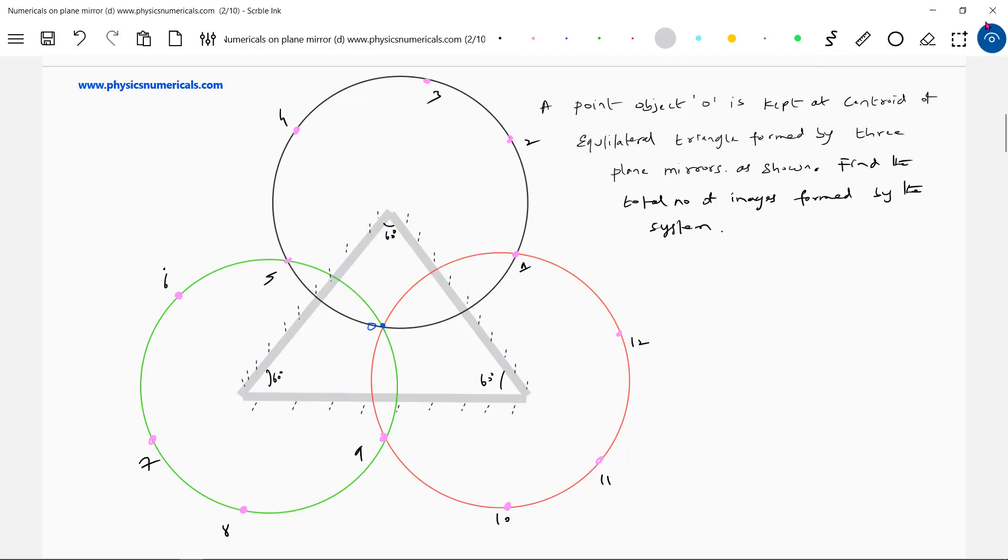Each pair of mirror will form five images, five plus five plus five, of which the three images are common. Okay, the common images, let me show by blue color. So these two, like one, five, nine, they'll become common. So total number of images will be equal to twelve.